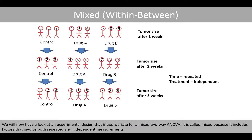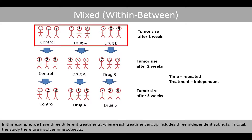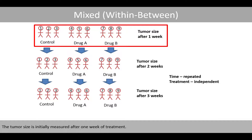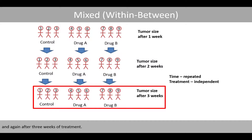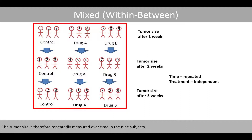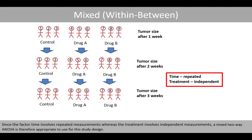We will now look at an experiment design appropriate for a mixed ANOVA. It is called mixed because it includes factors involving both repeated and independent measurements. In this example, we have three different treatments where each treatment group includes three independent subjects — nine subjects total. The tumour size is measured after one week, then again after two weeks, and then after three weeks of treatment. Since the factor time involves repeated measurements whereas treatment involves independent measurements, a mixed ANOVA is appropriate for this study design.